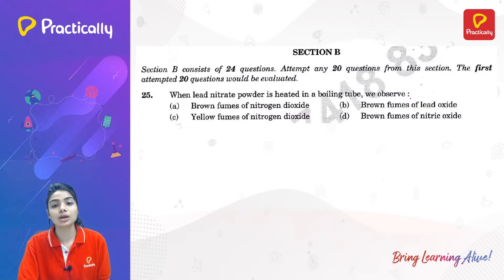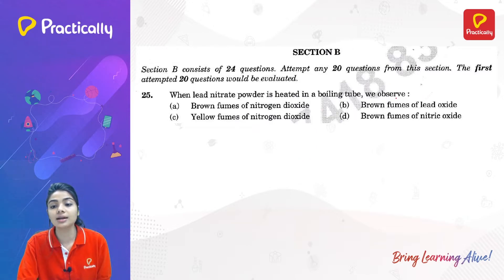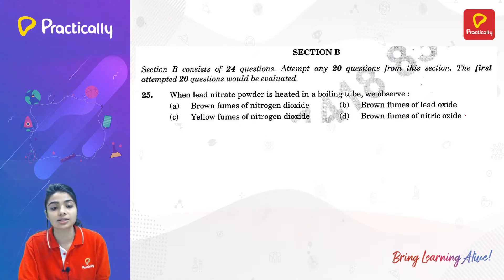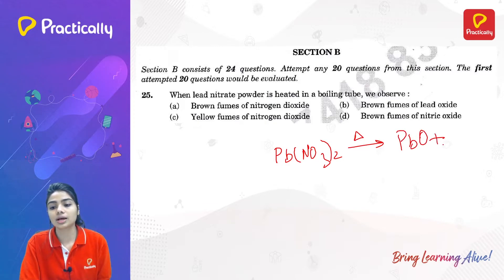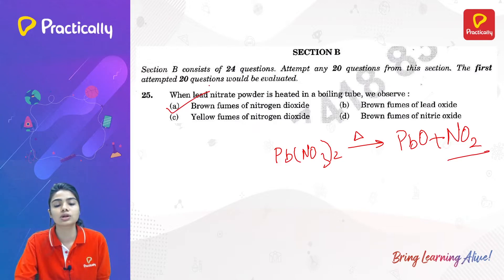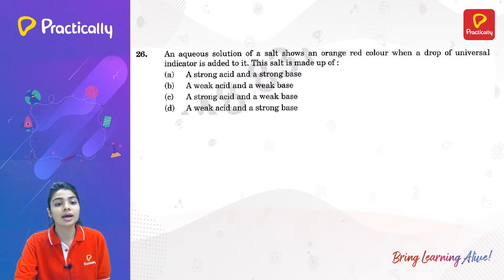When lead nitrate powder is heated in a boiling tube, we observe brown fumes of nitrogen dioxide and a yellow residue of lead oxide. Heating lead nitrate forms lead oxide — which is yellow in color — and nitrogen dioxide fumes, which are brown. So brown fumes of nitrogen dioxide is the correct observation.